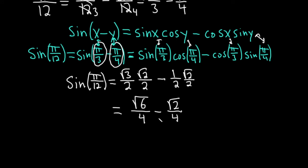So we're subtracting two fractions. And we have the same denominator. So we can combine these into a single fraction. This is the square root of 6 minus the square root of 2, all being divided by 4. And so that would be the final answer.